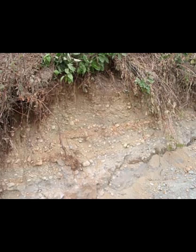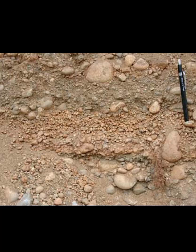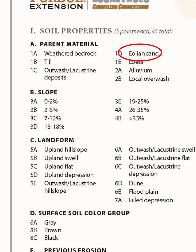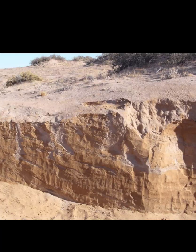Parent Material 1C, Outwash or Lacustrine Deposits. With this parent material, pebbles, if present, are mainly rounded and found in layers. It will either be coarse sand greater than 0.5 millimeters in diameter, or visible stratified layers of sand and silt. Parent Material 1D, Aeolian Sand. Here the surface texture is sandy or moderately sandy with sand particles ranging from 0.1 to 0.5 millimeters in diameter — similar to 150 grit to 40 grit sandpaper. There is no gravel or pebbles, and it is not stratified.